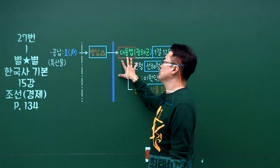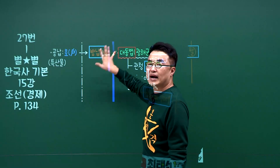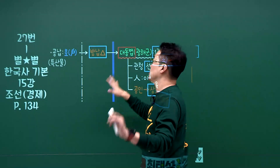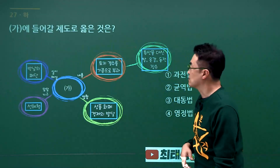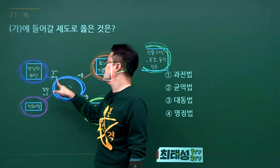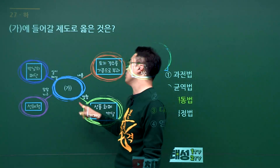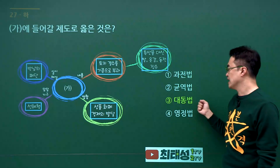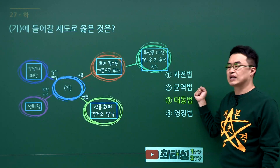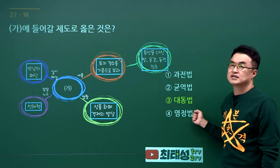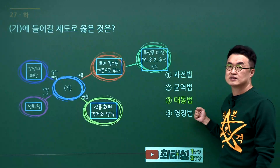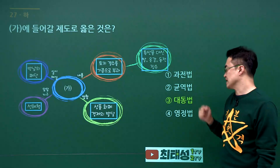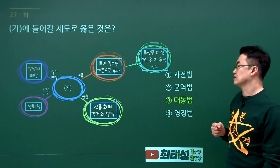대동법 문제입니다. 대동법이 시행된 이유는 방납의 폐단을 막기 위해서였습니다. 문제에서 방납의 폐단이 실시 배경으로 나왔으니 대동법입니다. 3번을 고르시면 됩니다. 균역법은 역의 폐단을 막기 위해, 영정법은 전세 토지세를 관리하기 위해 만들어진 것입니다. 정답은 3번입니다.